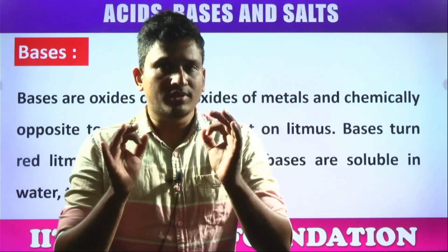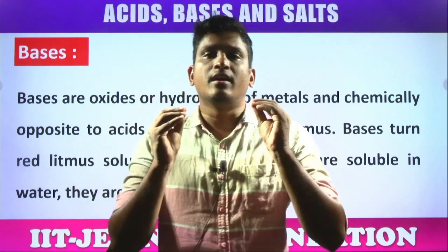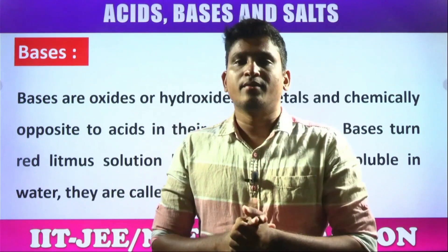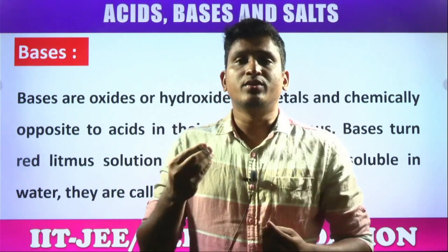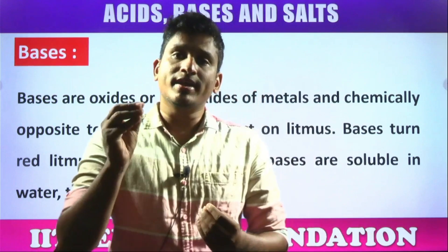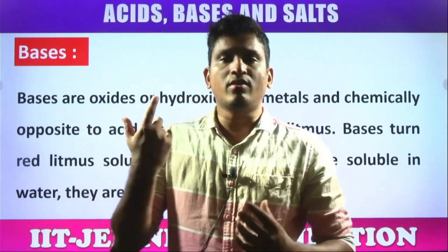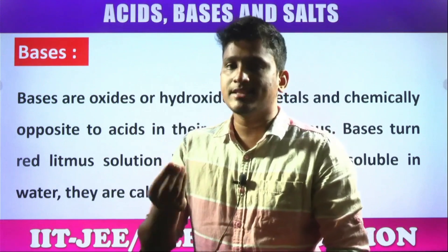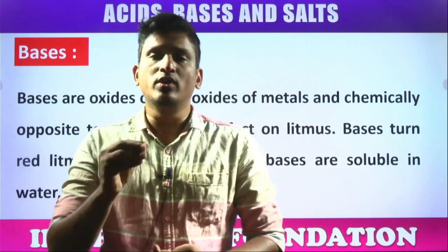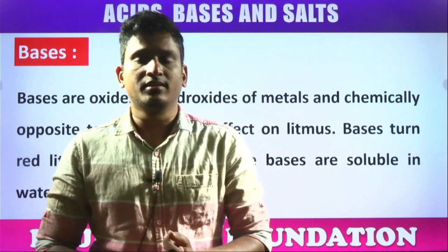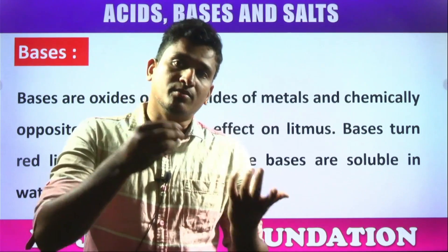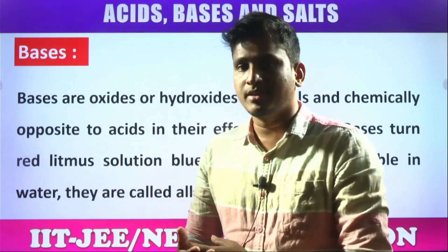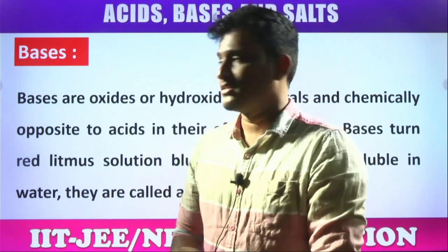Now when it comes to bases, bases are the particles or substances which have a capacity to release OH⁻ ions — hydroxyl ions — according to the Arrhenius theory. They are called as bases. Acids turn blue litmus red, but bases turn red litmus blue color. That means bases show completely opposite behavior towards acids.